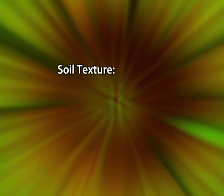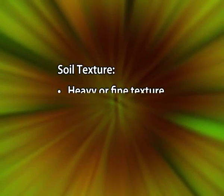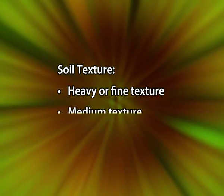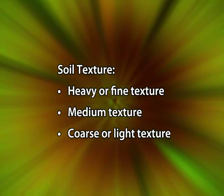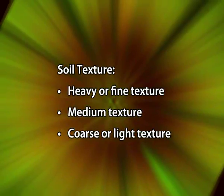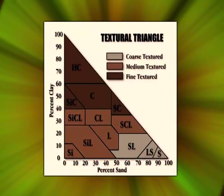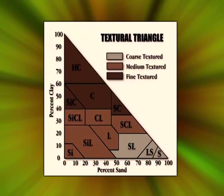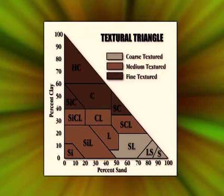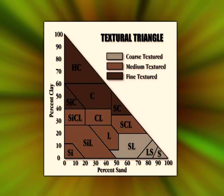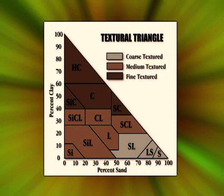There is another type of soil texture classification according to which soil textures are of three types: one, heavy or fine texture; two, medium texture; and three, coarse or light texture. A soil dominated by clay particles is called fine or heavy textured soil, while a soil having sandy particles as the dominant constituents is called coarse or light textured soil. Medium textured soils are ones where the three mineral particles are present in about equal proportions.